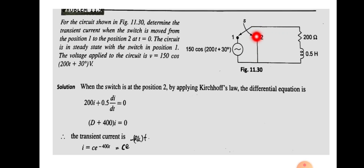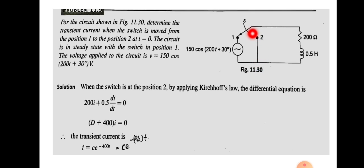When the switch is at position 2, the circuit contains only the resistor and inductor. Before time t equal to 0, the switch is at position 1, forming a closed loop. You should know how the current flows when the switch moves from one position to the other. There will be some current flowing through this circuit before t equal to 0 because there is a continuous closed loop through switch position 1.